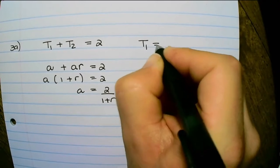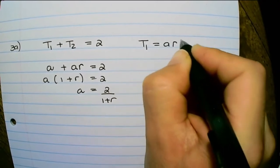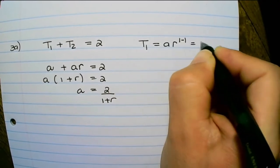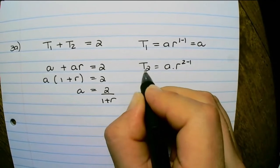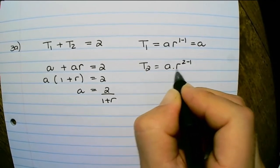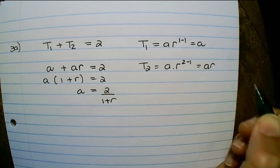Remember, term one is a times r to the power of one minus one, which equals a, and term two is a times r to the power of two minus one, which is ar.